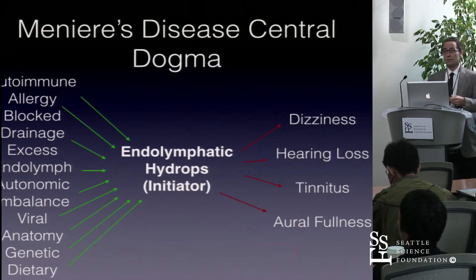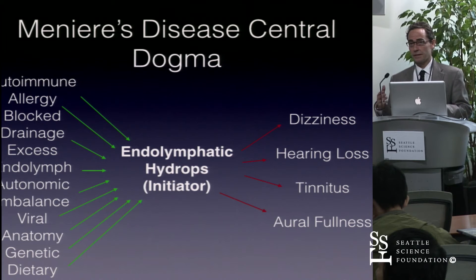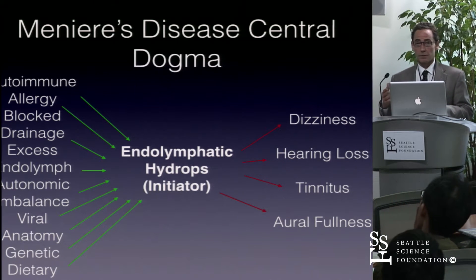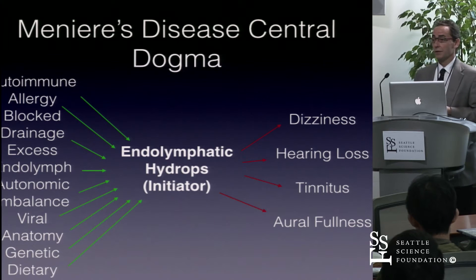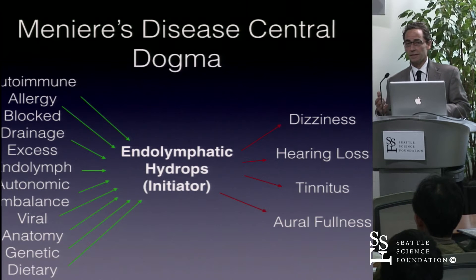The central dogma for Meniere's disease has always been focused on endolymphatic hydrops as the initiator. It causes episodic dizziness, hearing loss, tinnitus, and aural fullness. The mechanisms have been multifactorial — some people talk about autoimmune, allergy, blocked drainage with the endolymphatic duct being blocked or excess endolymph production, autonomic imbalance, potentially viral cause, and anatomy, such as a laterally prominent sigmoid sinus.